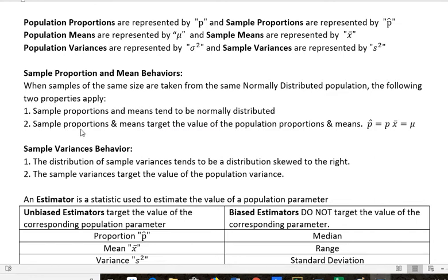Sample proportions and means target the value of the population proportions and means. In other words, P-hat is going to pretty much equal P and X-bar is pretty much going to equal mu. So we know that we can use those and they're equal.